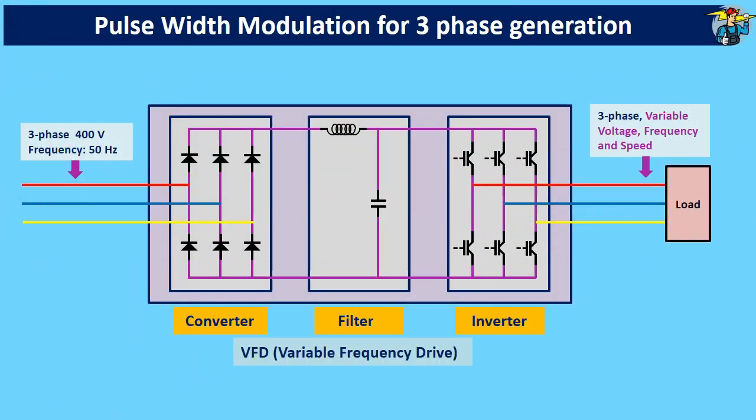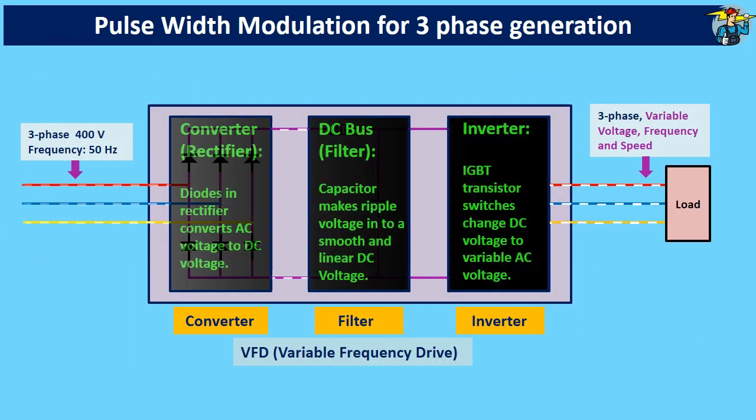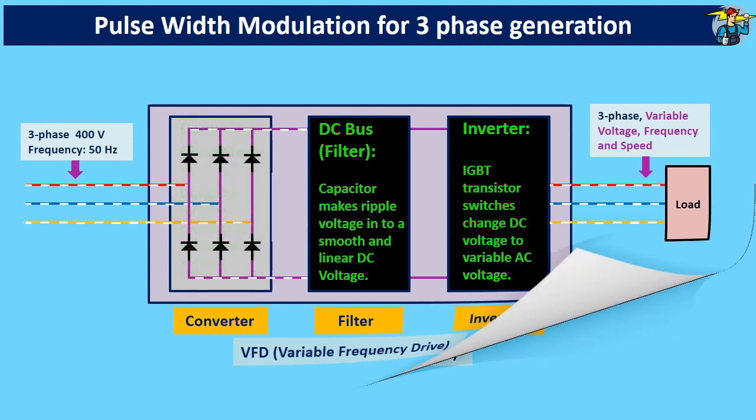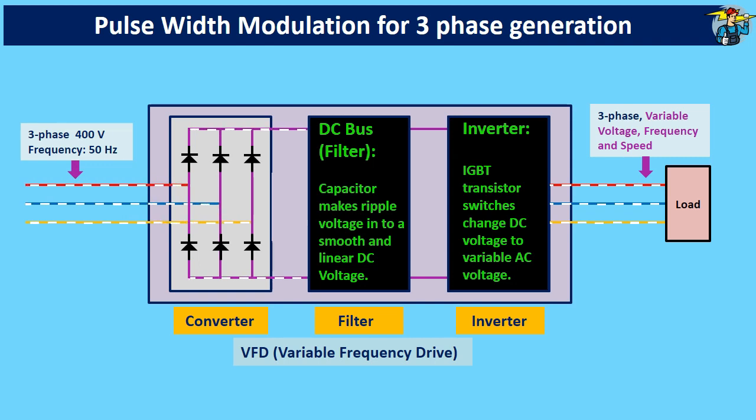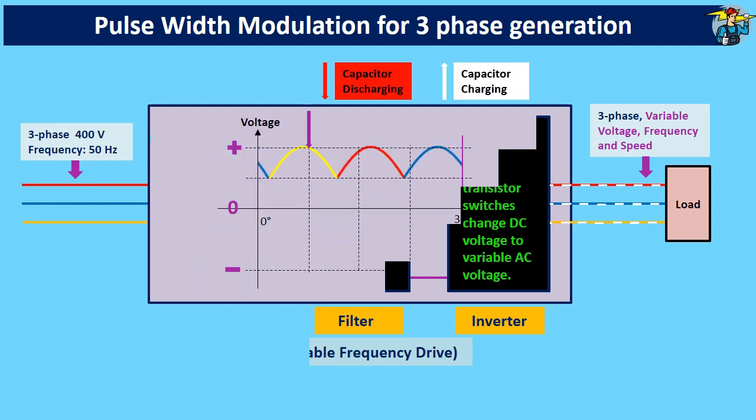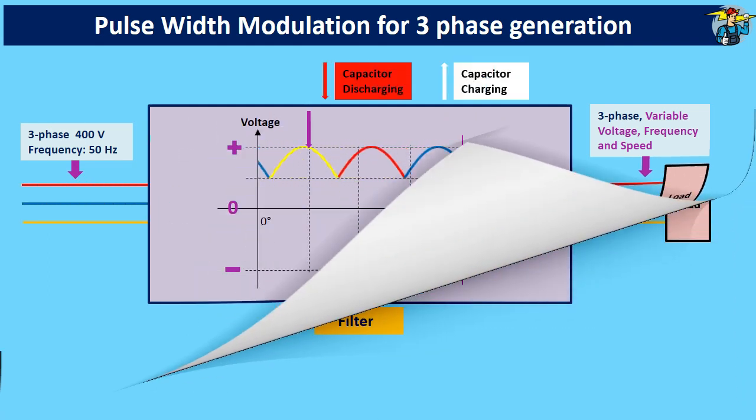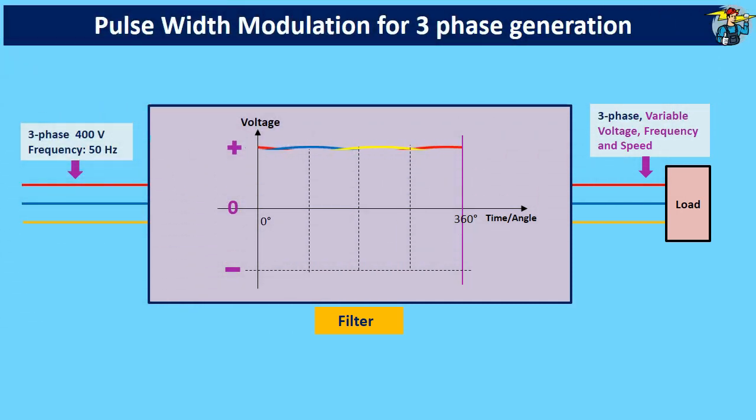You know, a variable speed drive has 3 main parts, namely the converter, filter, and the inverter. The rectifier diodes in the converter convert AC voltage to DC voltage, but are not real enough with ripples right along. The filter capacitors and inductors transform this DC voltage with ripples into a smooth linear DC voltage.